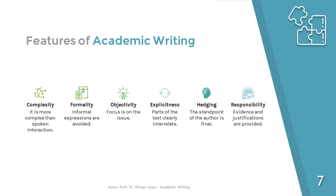Another feature is formality — any informal words and expressions should be avoided in academic work. As for objectivity, the focus should be on the issue or topic rather than you as the author. Regarding explicitness, how parts of the academic texts relate to one another is your responsibility by using signaling words. Academic writing is explicit. And hedging — you should decide upon your viewpoint on a specific matter or the power of your claims. Finally, as a feature of academic writing, we can talk about responsibility: you are responsible partly for providing evidence and justification for your claims in your writing.